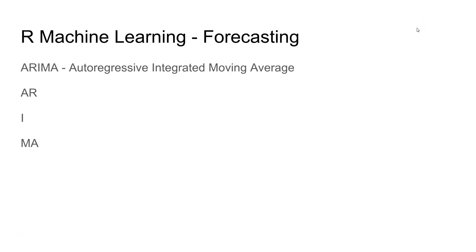Welcome to the next video. In this video I will talk about the ARIMA methodology for doing forecasting. ARIMA basically stands for Autoregressive Integrated Moving Average, and to do the ARIMA methodology you need to identify the AR term, the I term, and the MA term.